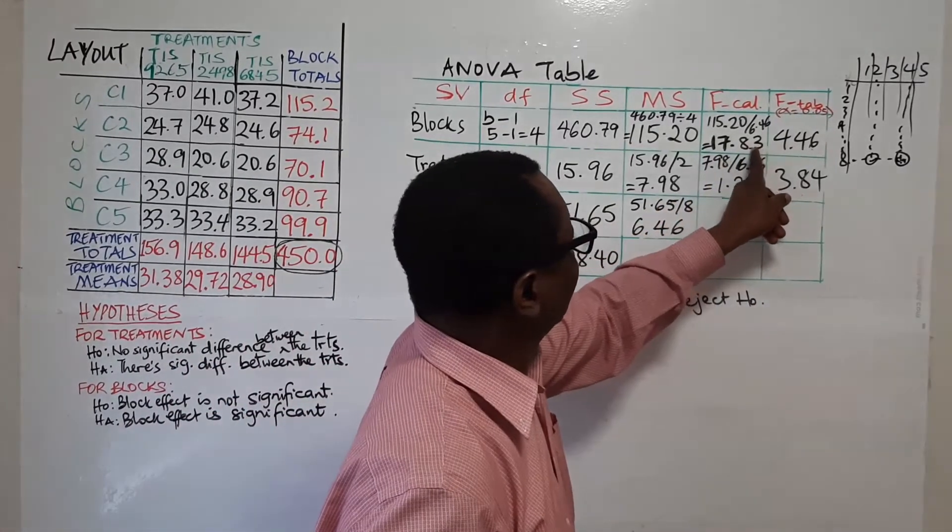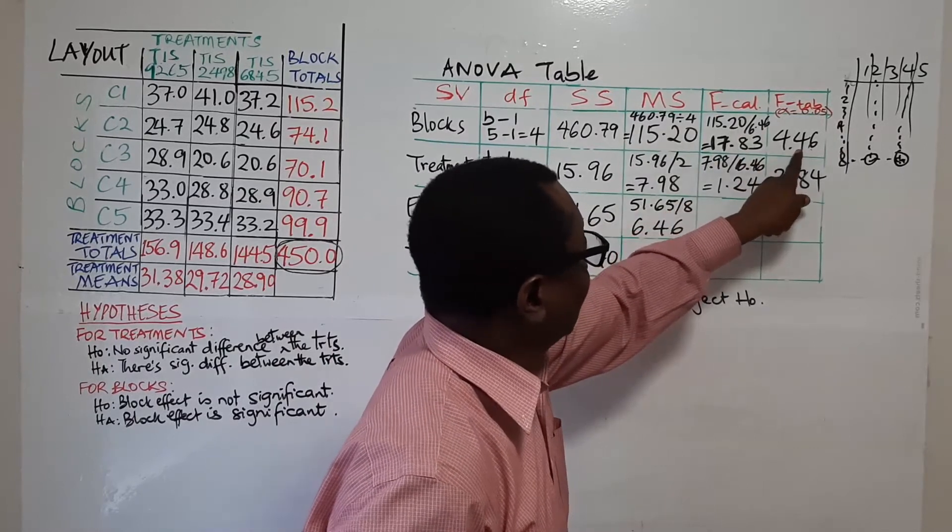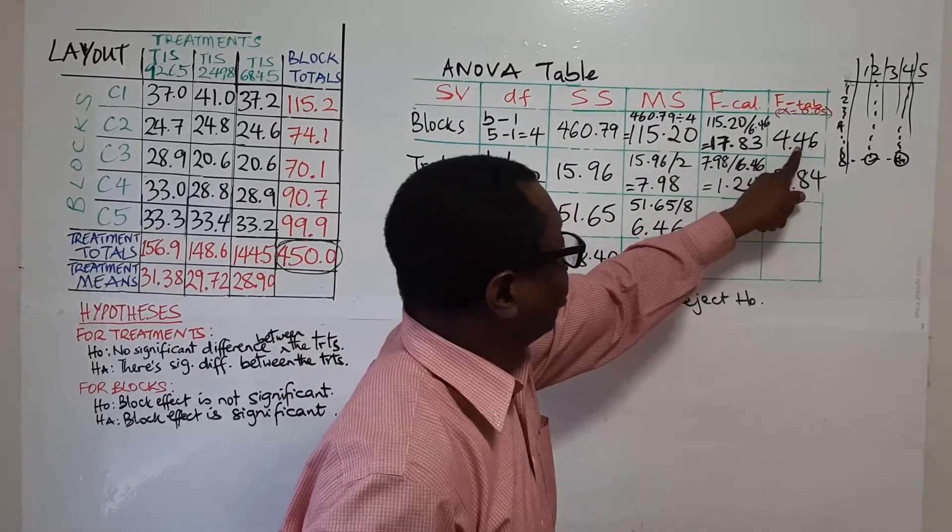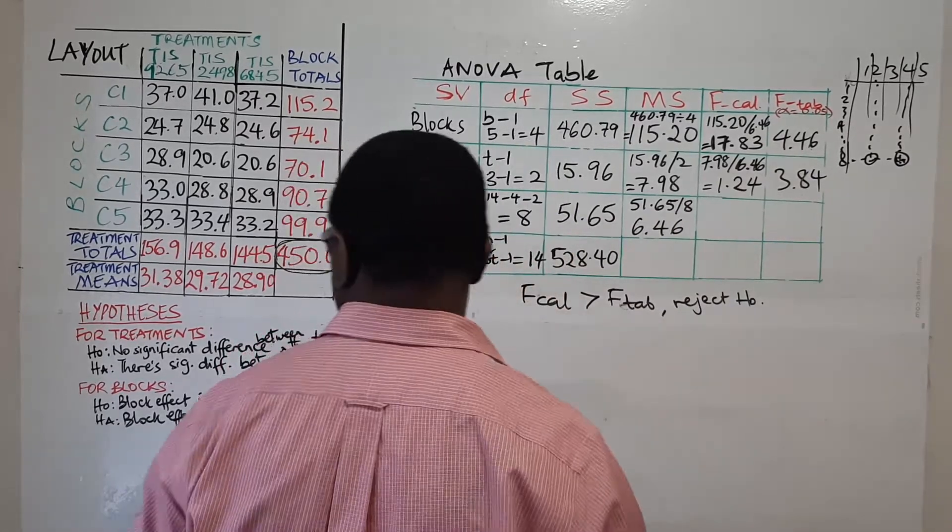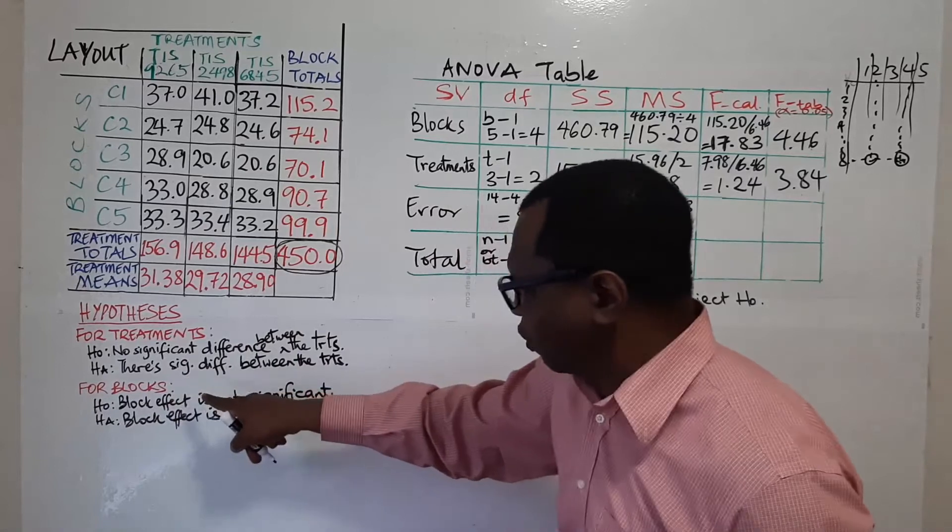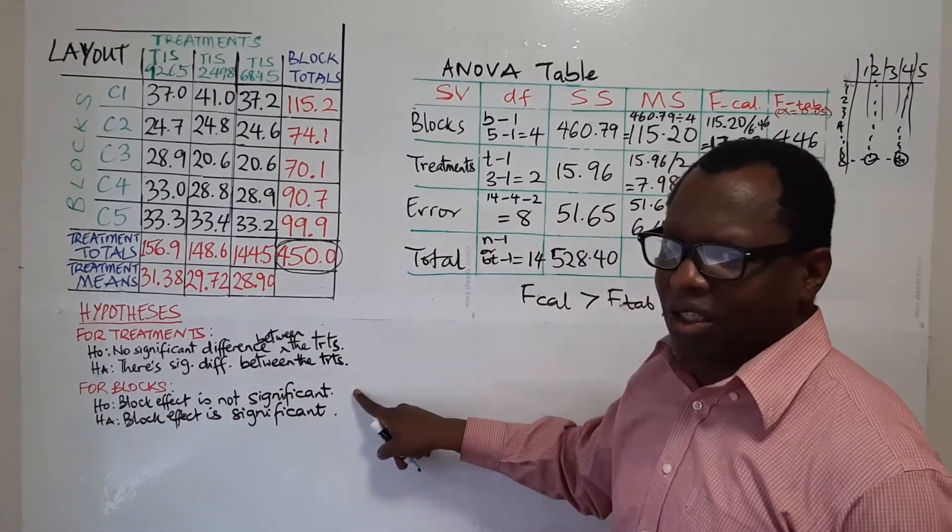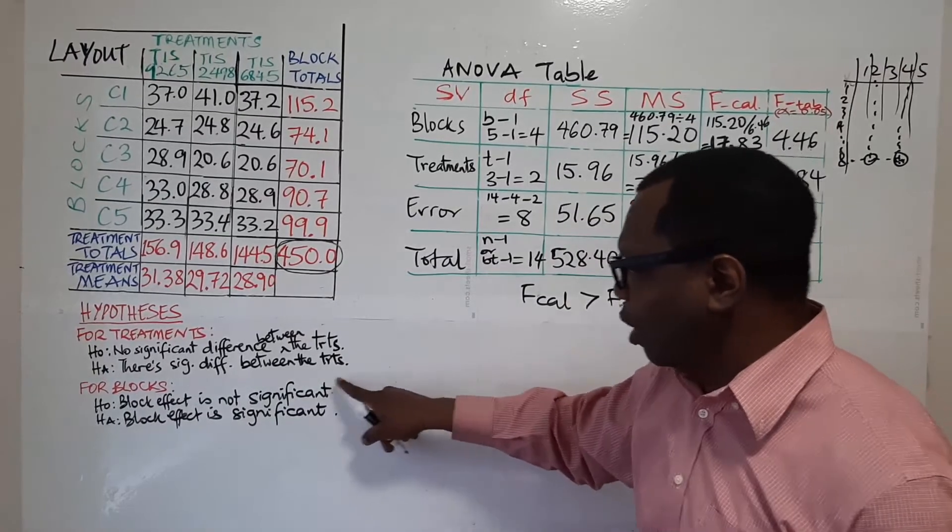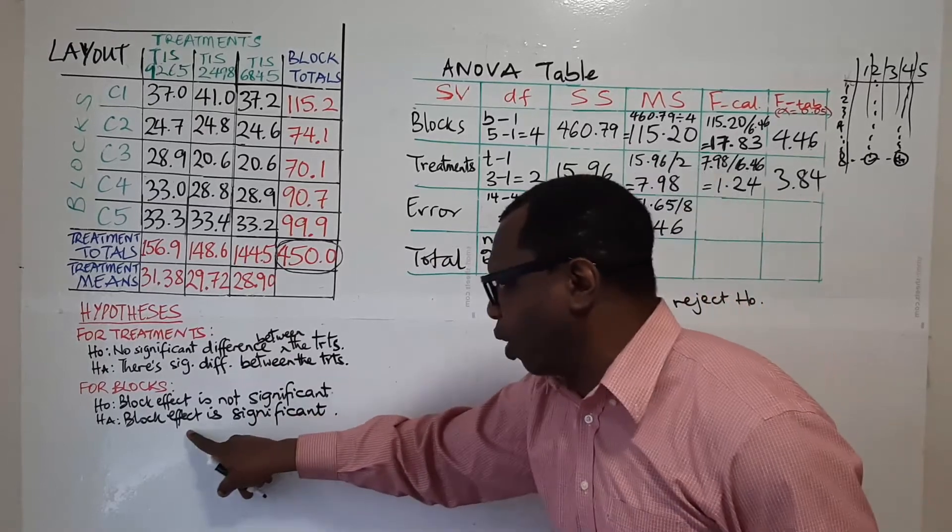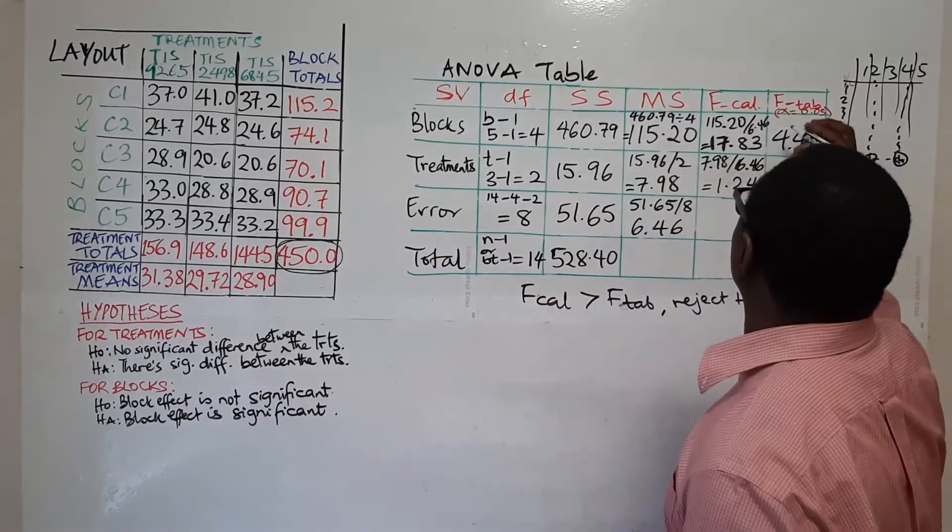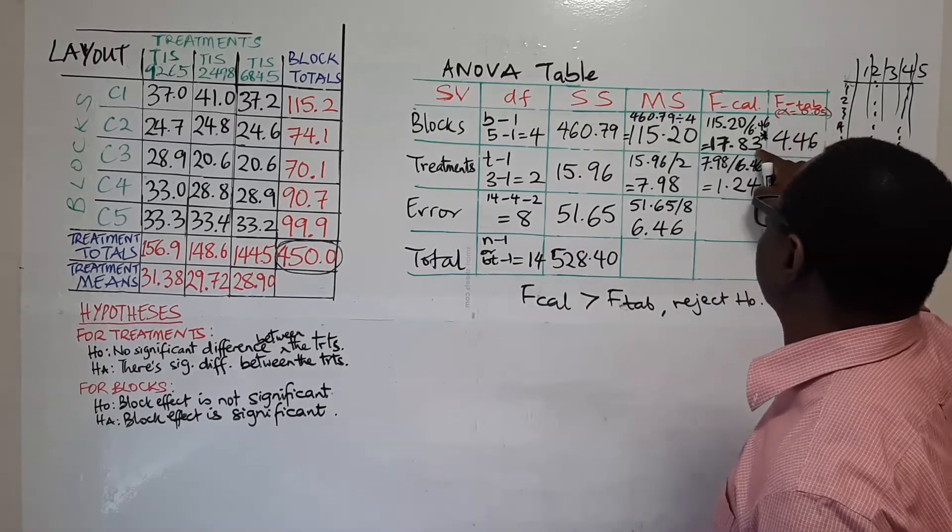For our blocks, our F-car is greater than the F-tab. So we reject null hypothesis. And what does the null hypothesis for blocks say? You come back to the hypothesis for blocks, null says block effect is not significant. So we reject that hypothesis. So we accept the alternative, which says block effect is significant. So this value here is significant. I can put an asterisk there.